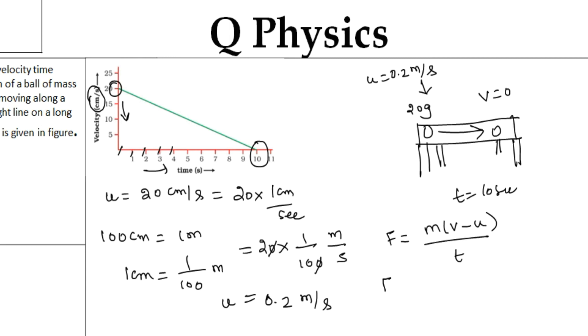Mass is given by 20 grams. If you convert into kilograms, 20 by 1000 kilograms. So that is equal to, if I cancel, I am going to get 0.02 kg as the mass.